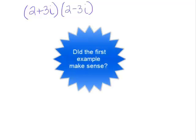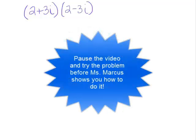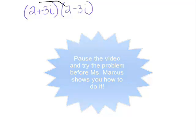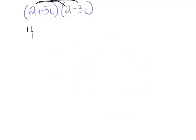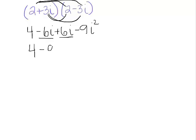Here we have another example. Let's multiply 2 plus 3i times 2 minus 3i. Using what we did before we would get 2 times 2 is 4, 2 times negative 3i is negative 6i, 3i times positive 2 is positive 6i, 3i times negative 3i is negative 9i squared. Take a look at what happened to our middle terms. Negative 6i plus 6i is 0. So this just becomes 4 minus 9i squared. But remember, i squared is negative 1. So this becomes 4 plus 9 or 13.